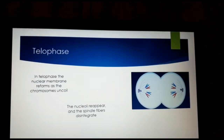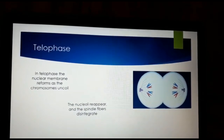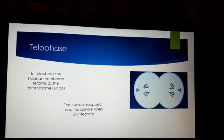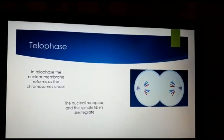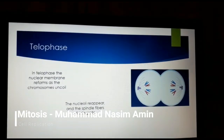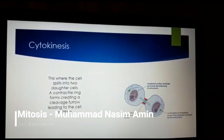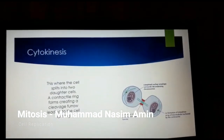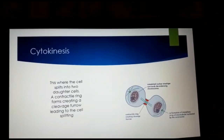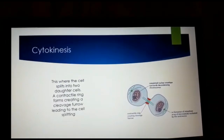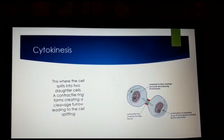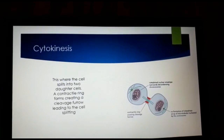This is followed by telophase. In telophase, the nuclear membrane reforms as the chromosomes uncoil. The nucleoli reappear and spindle fibers disintegrate. Cytokinesis is when the two daughter cells are made. This occurs due to the contractile ring forming, creating a cleavage furrow, causing the cells to separate.